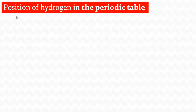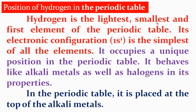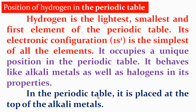Now we come to the next topic: Position of Hydrogen in the Periodic Table. Hydrogen is the lightest, smallest and first element of the Periodic Table. Its electronic configuration is 1s1. It is the simplest of all elements. It occupies a unique position in the Periodic Table because it has the properties of both alkali metals — that is, Group 1 elements — as well as halogens, which are Group 7 elements. In the periodic table, hydrogen is placed at the top of the alkali metals.